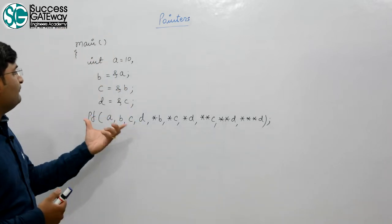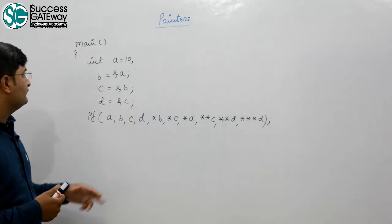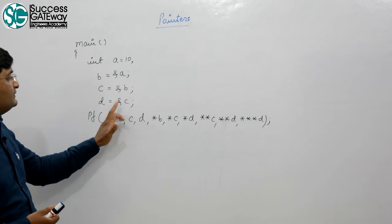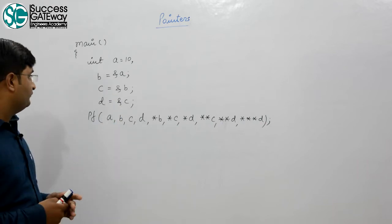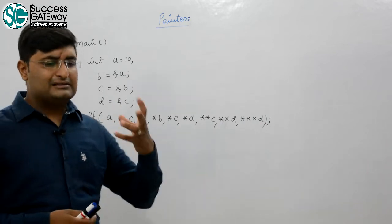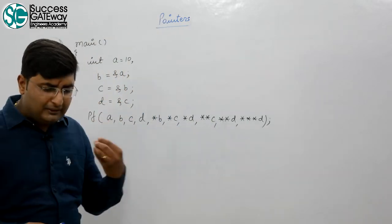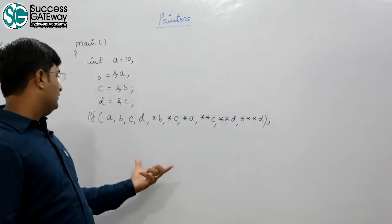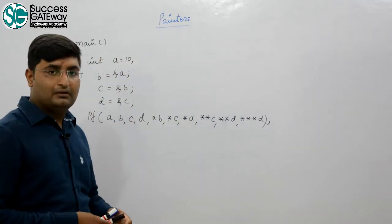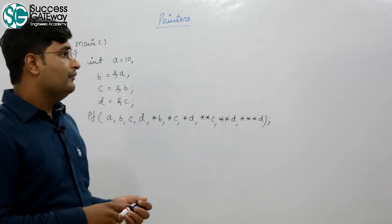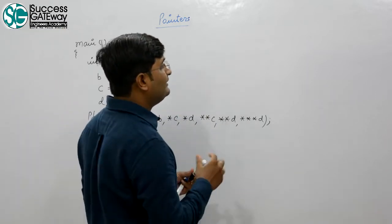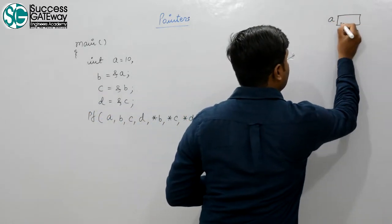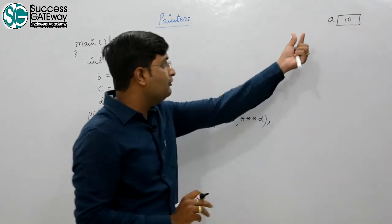Start from a very basic question: integer a is equal to 10, b is equal to address of a, c is equal to address of b, d is equal to address of c. What should be the declaration of b, c, and d, and what is the printed value? In the case of a pointer, we should consider the memory location — a is equal to 10, the value of a is equal to 10.